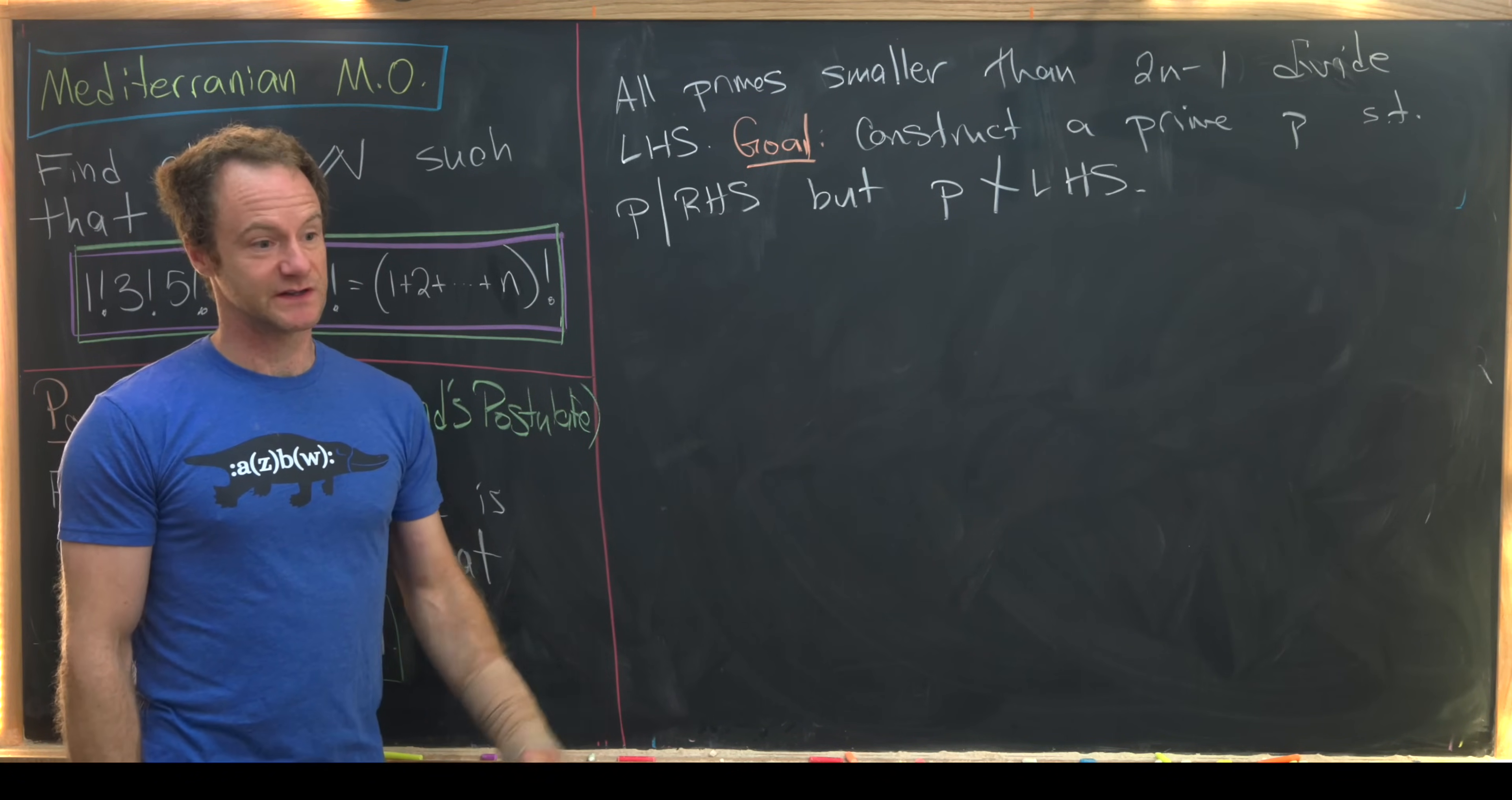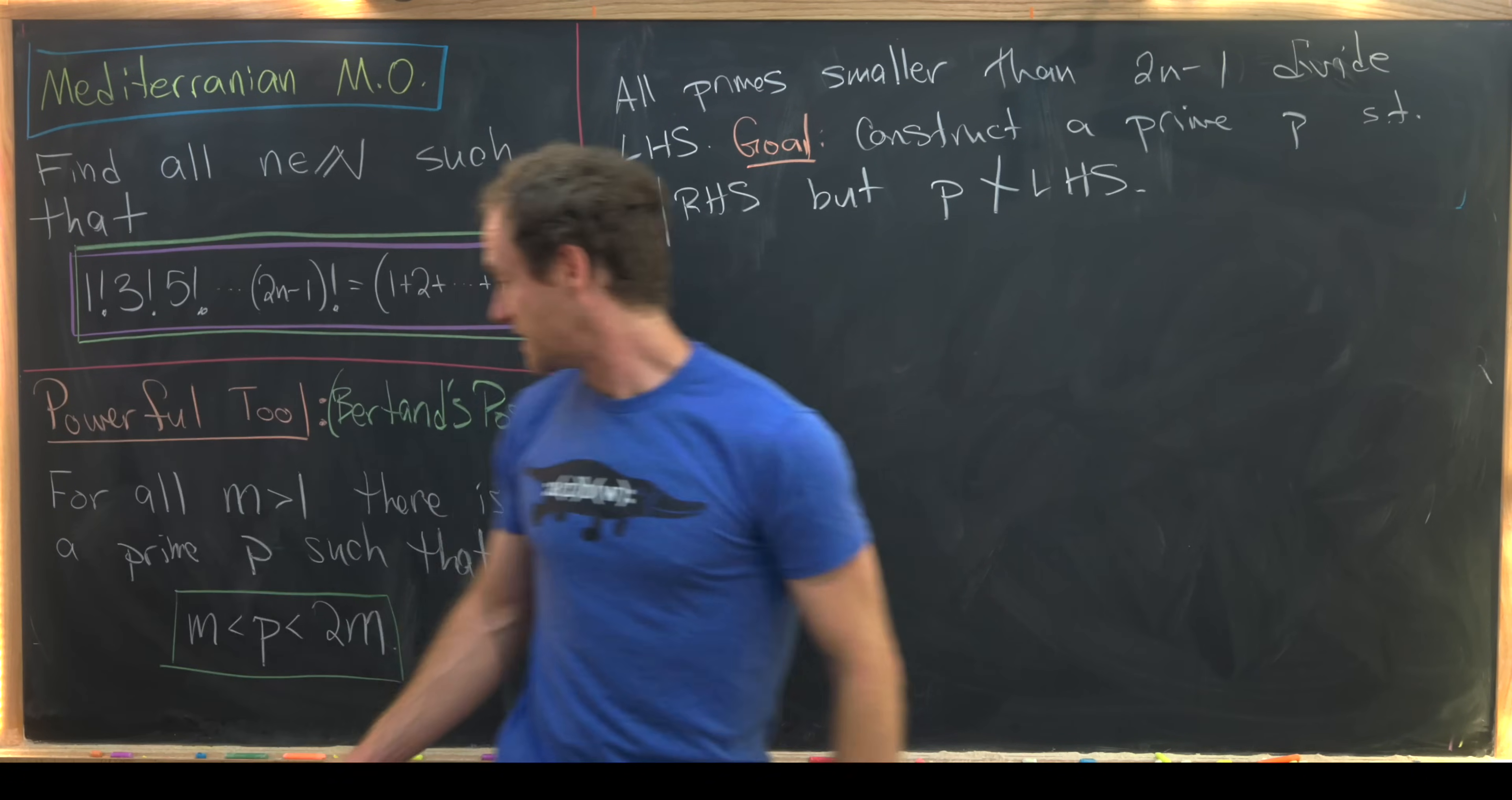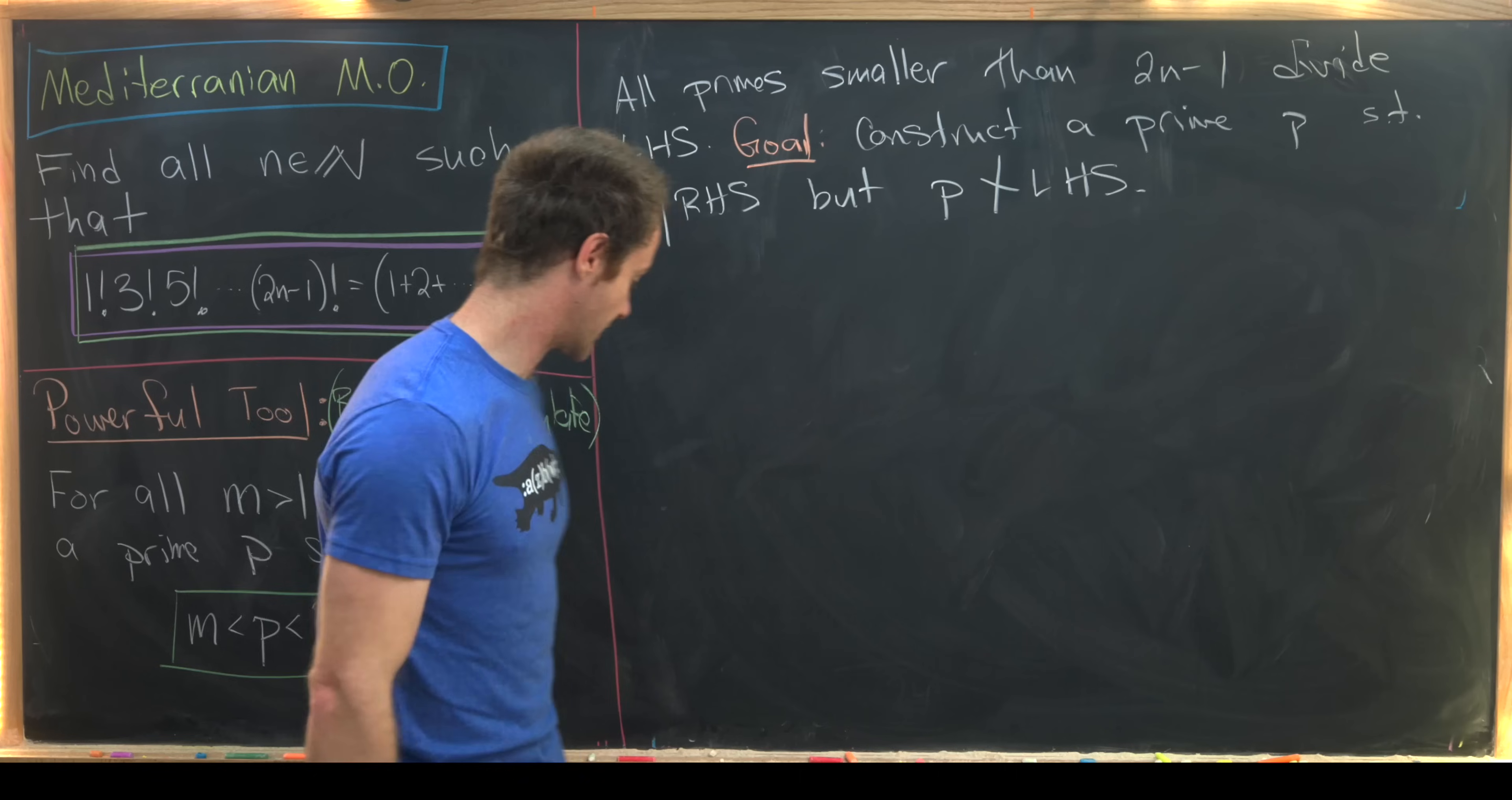But I mean there are infinitely many primes larger than 2n minus 1, so we probably want to bound that above by something, and we can do that just with Bertrand's postulate over here.